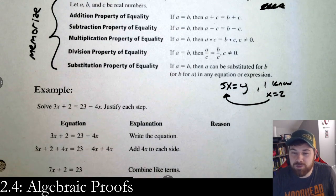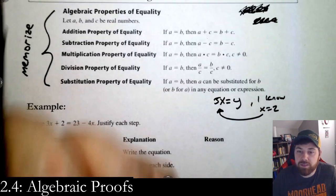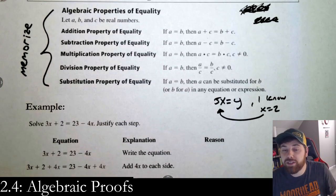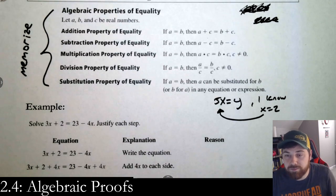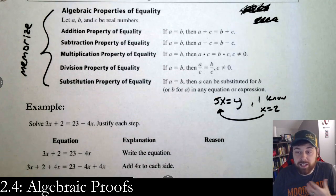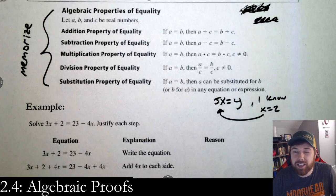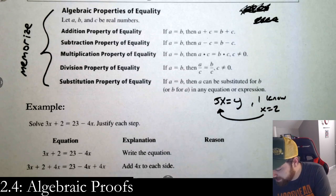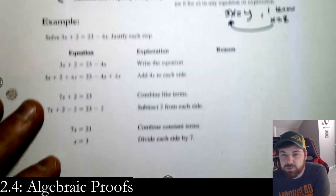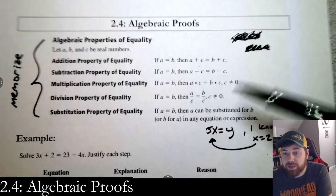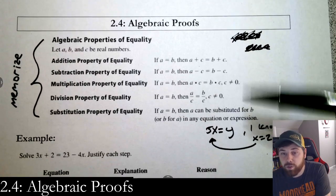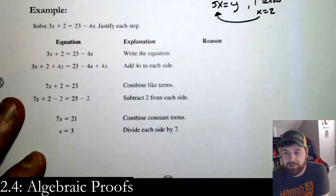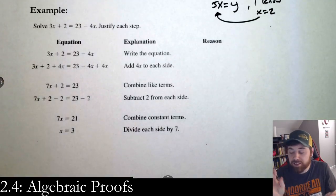These properties — the first four should be obvious. The last one is just plugging something in; if you're plugging something in, it's substitution. They're all properties of equality. The next section will have properties of congruence, but that won't be this section. Make sure you know where they're at because I'm going to use them without talking about them explicitly.